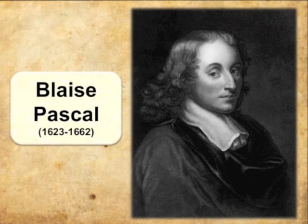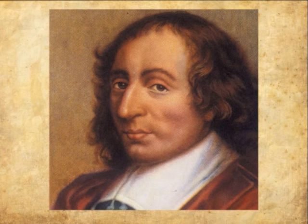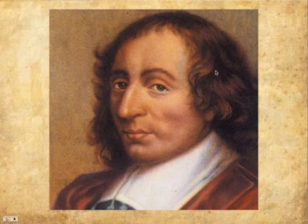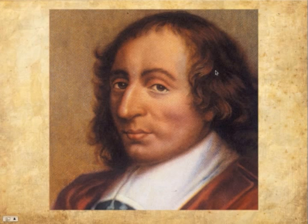Blaise Pascal is a French mathematician. He was born in Clermont-Ferrand on June 19, 1623. He had many accomplishments in mathematics and science. Pascal died in 1662 at the age of 39, before his work was published. One of his valuable accomplishments was published in 1665, which is Traité du Triangle Arithmétique, or Pascal's Arithmetic Triangle.